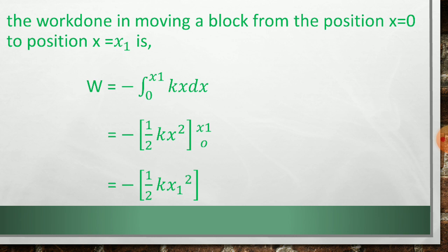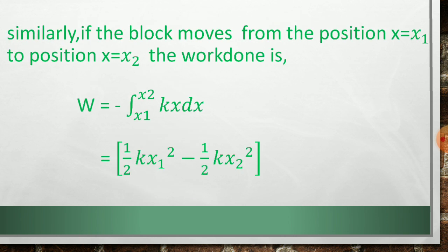Now similarly, if the block moves from the position x is equal to x1 to position x is equal to x2, then the work done is minus integration x1 to x2 kx dx equal to 1 half kx1 square minus 1 half kx2 square.